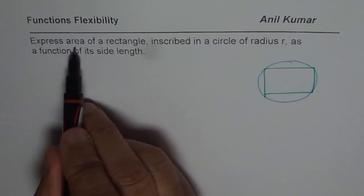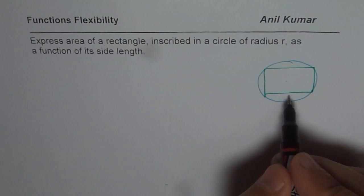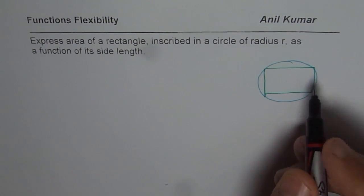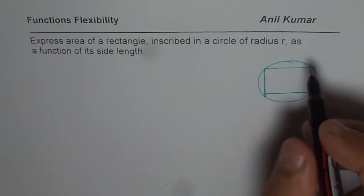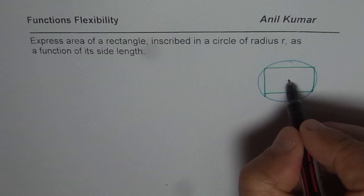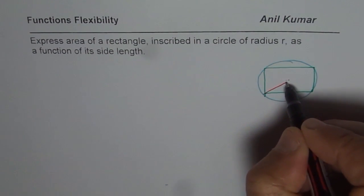We need to express area of the rectangle. Now what is the area of the rectangle. Area of the rectangle is length into width. So how do we write that in terms of radius of the circle. So this is the circle. Let us say that's the center. And this center should go through the diagonal of our rectangle.